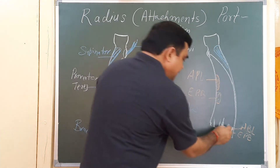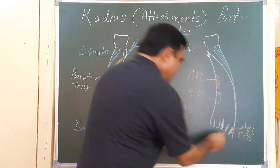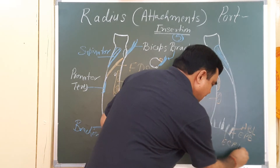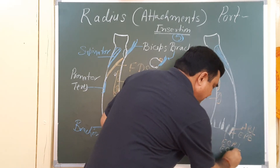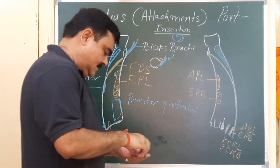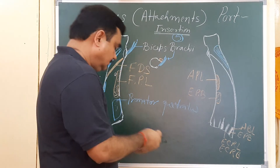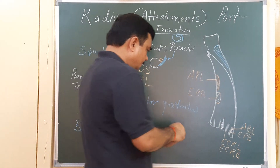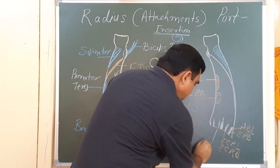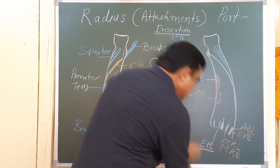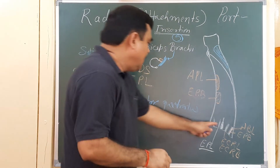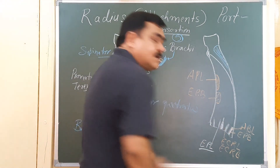In the second compartment, extensor carpi radialis longus and extensor carpi radialis brevis tendons pass. In the third compartment, which is the oblique groove, extensor pollicis longus tendon passes. This groove is known as the oblique groove.